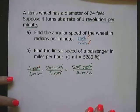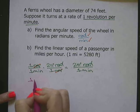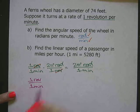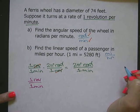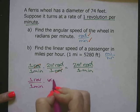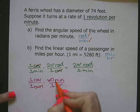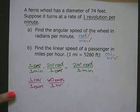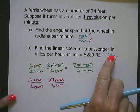Now let's look at part B. Part B asks for the linear speed of a passenger in miles per hour. Again, we start with what we already know: one revolution in one minute. We want miles on top and hours on the bottom. We can cancel out the minutes because we need hours — there are 60 minutes in one hour. So now we have hours in the denominator, which was our goal. Next we need to get to miles.